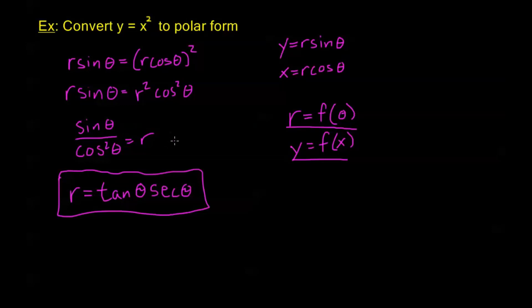In general, going from rectangular to polar is very straightforward. We always have a mix of x's and y's, and the key is: everywhere we have a y we put r sine theta, and everywhere we have an x we put r cosine theta.